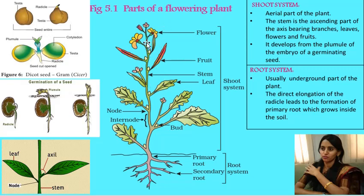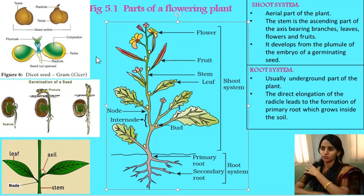What are flowers? As mentioned, flowers are the reproductive structures of the plant. Later in this chapter, we will be learning in detail about the structure of flowers. After pollination and fertilization, the ovary will develop into a fruit which consists of seeds. You need to practice the diagram of the flowering plant.